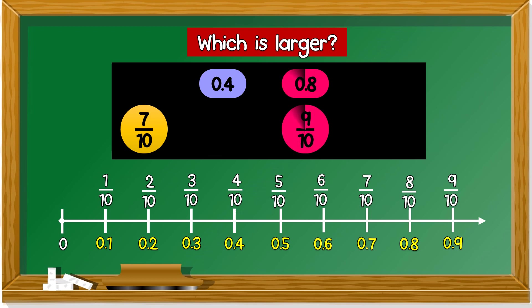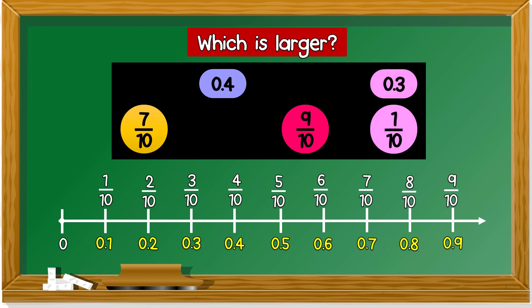Next: 0.8 and 9 over 10. 0.8 is here, 9 over 10 is here. Which is larger? 9 over 10. Last example: 0.3 and 1 over 10. This is 0.3, and this is 1 over 10. Which is larger? 0.3. Excellent.